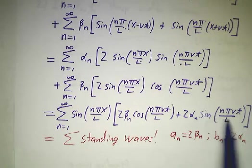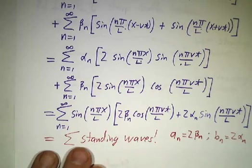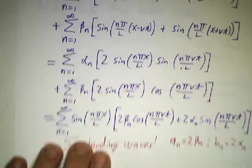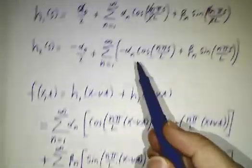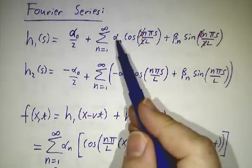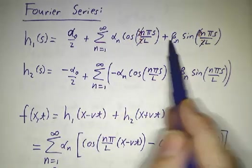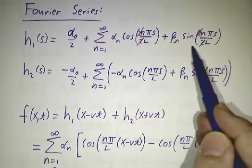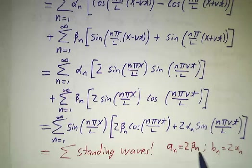So you put it all together and you get sum of sin n pi x over L, 2 beta n cos plus 2 alpha n sine. Those are standing waves. Not only are they standing waves, but the coefficients of the standing waves, which we called an and bn, are exactly the Fourier coefficients of h1 and h2. The only difference is that the alpha contributes to b and the beta contributes to a. An is actually twice beta n, bn is twice alpha n.